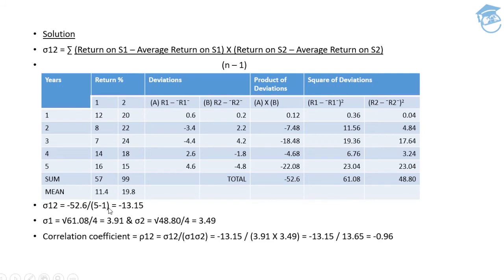Now I need to get the standard deviation for security one and security two. For security one: take the square root of the sum of squared deviations (61.08) divided by n minus 1 (which is 4), giving a standard deviation of 3.91. For security two: the square root of 48.80 divided by 4 gives a standard deviation of 3.49.